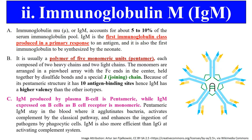One monomeric antibody has two binding sites for antigen. So in the case of the pentameric antibody it will have 10 antigen binding sites, and these are interlinked with the help of a joining chain. So IgM is the antibody that exists in both pentameric and monomeric forms.